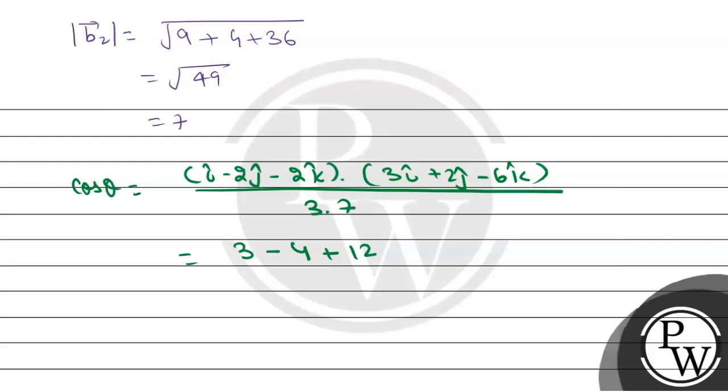plus 12 divided by 21, so the value is 11 divided by 21. So theta is cos inverse 11 divided by 21. This is our final answer. I hope the concept is clear.